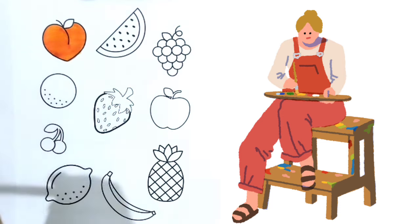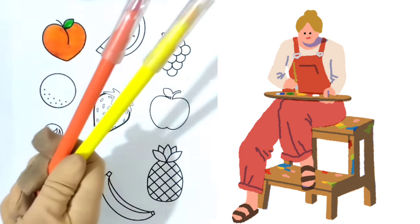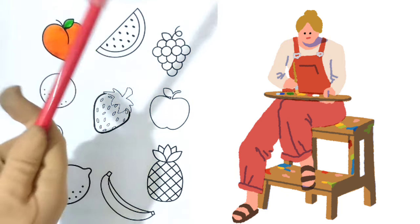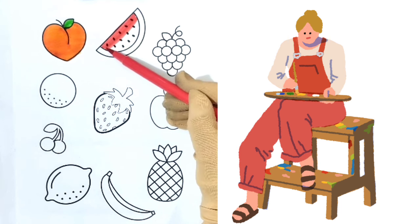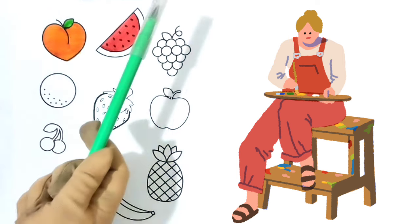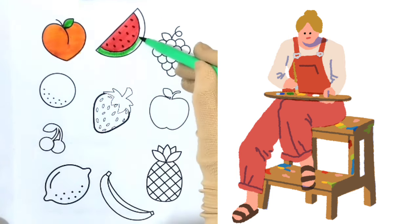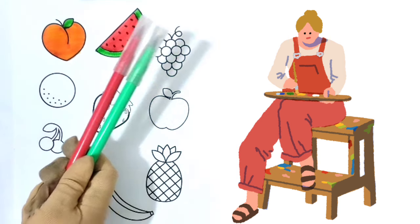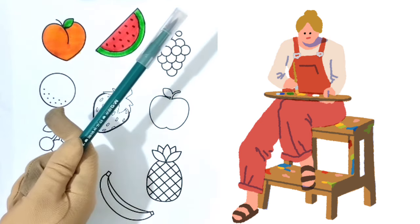Green color. Orange and yellow, peach, watermelon, red color. Green color. Put in green watermelon. Grape's green color.